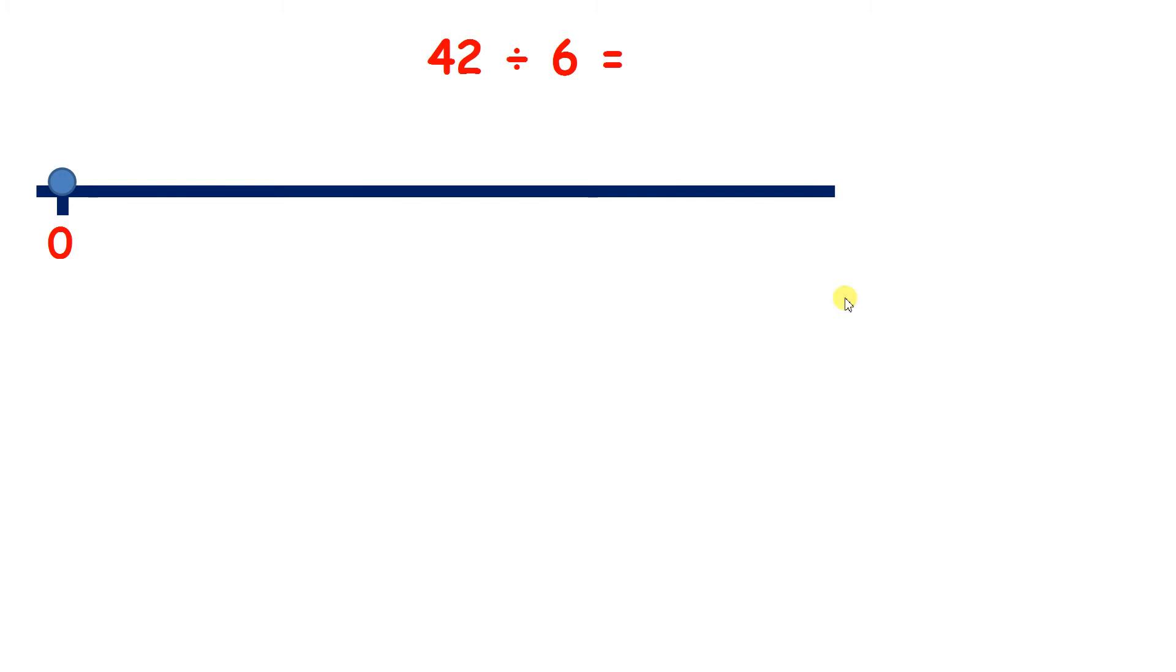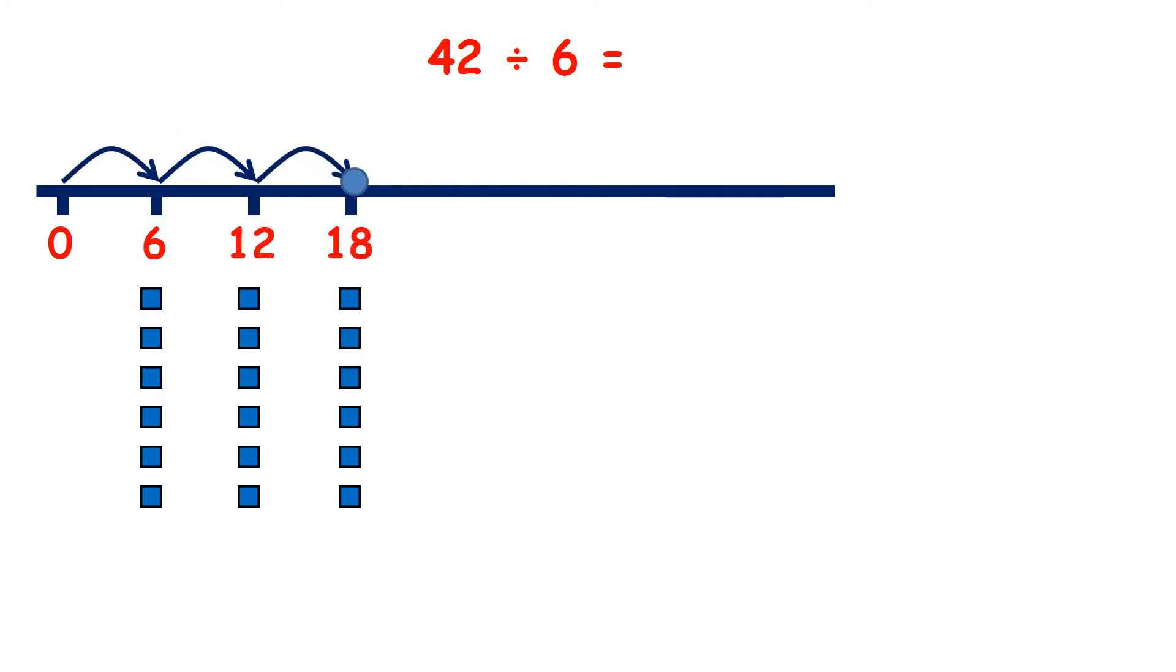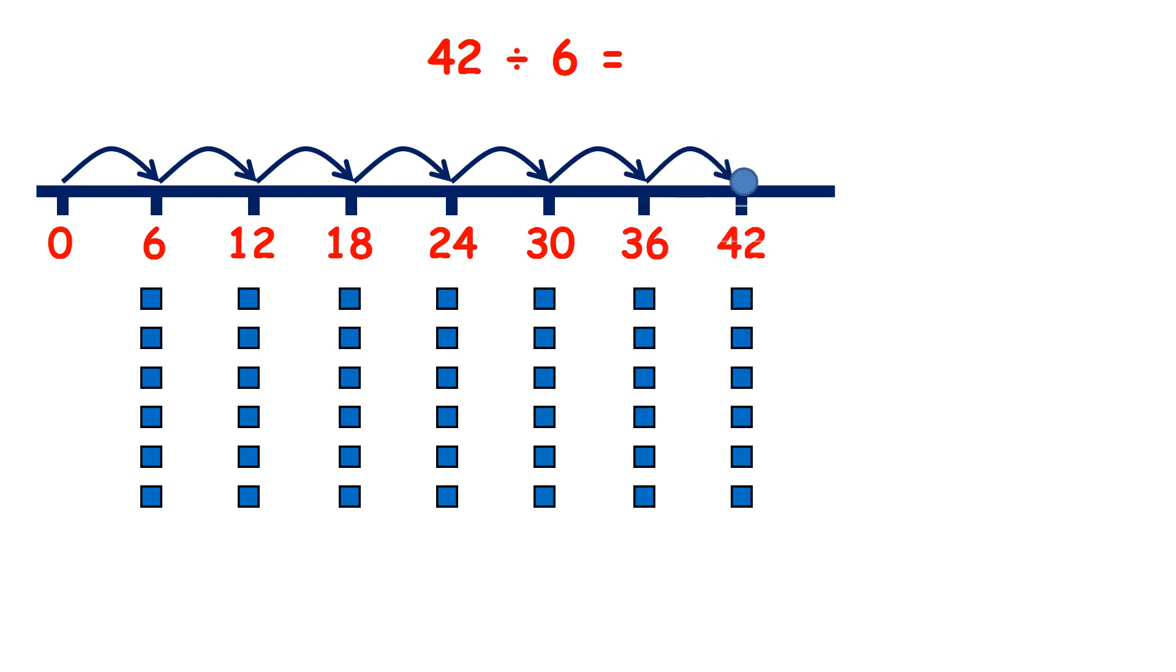Now 42 divided by 6, so let's count 6, 12, 18, 24, 30, 36, 42. So we have 7 jumps, so 42 divided by 6 equals 7.